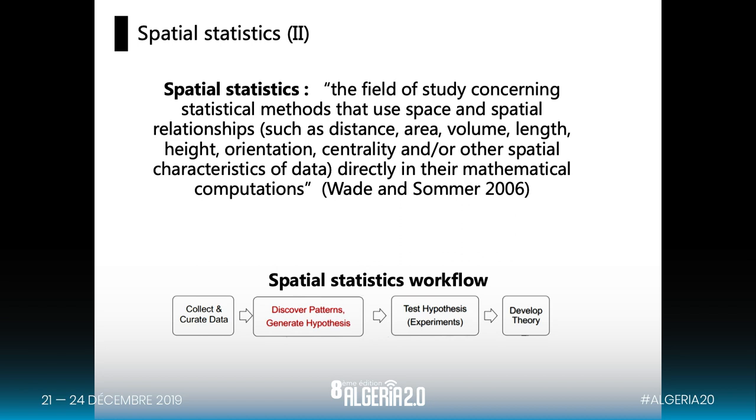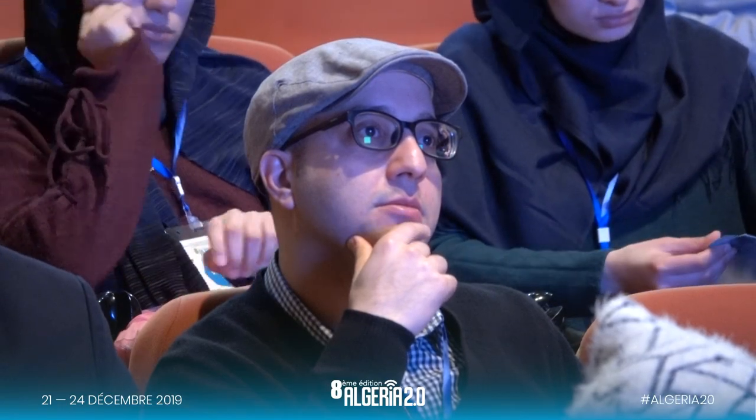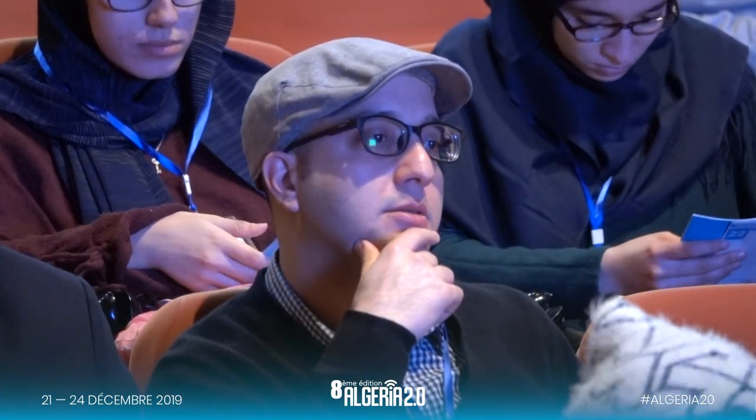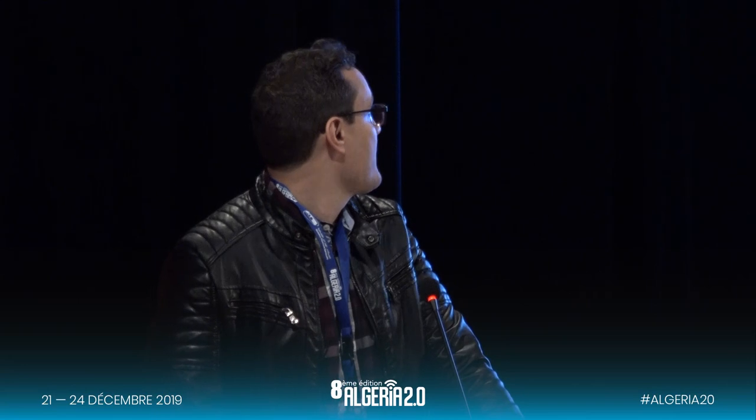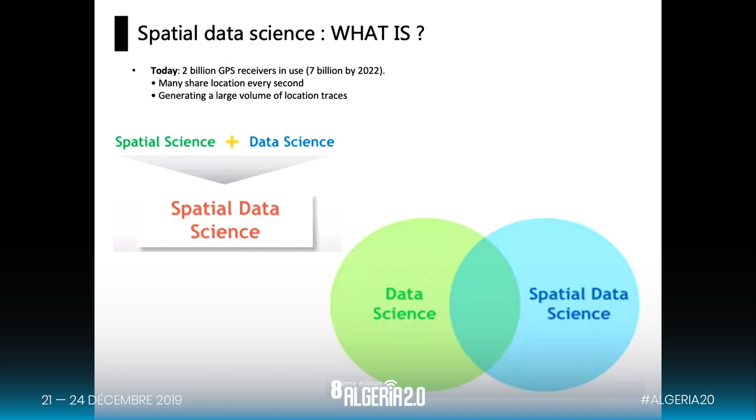The spatial statistics workflow is that we collect spatial data, we discover patterns, we generate hypotheses, we test those hypotheses, and finally we develop some theory. The combination of spatial statistics and data science, we call spatial data science.